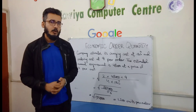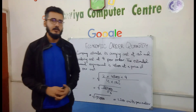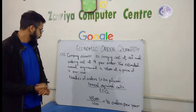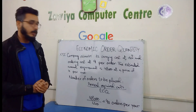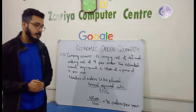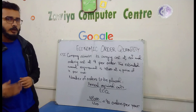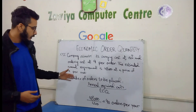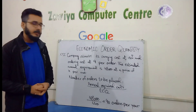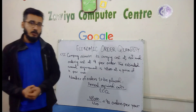Now let us see how to calculate the number of orders to be placed within a year using the same question. The formula is: annual required units divided by Economic Order Quantity. We have 48,000 annual units divided by the EOQ of 1,200 units, which gives us 40 orders per year.